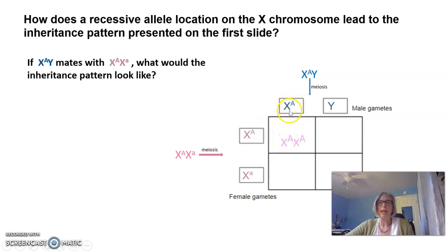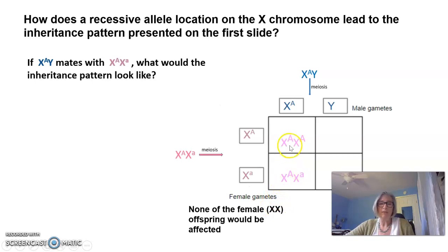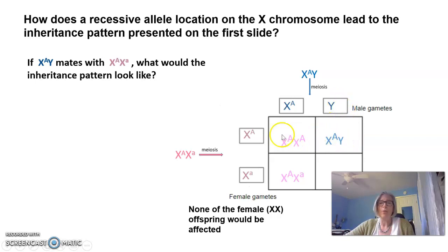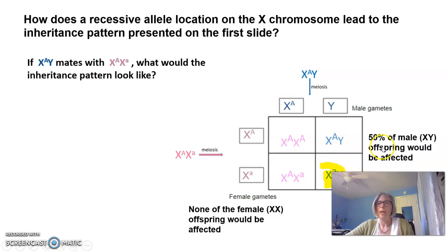Looking at what would be produced: taking the X from the father and the X from the mother gives a homozygous dominant female — she would not display the trait. The next case gives a heterozygous female. None of the female XX offspring would be affected because they have a dominant allele overriding the recessive. For males, the father gives the Y chromosome; the mother could give the X with the dominant allele — unaffected — or the X with the lowercase allele — affected. So 50 percent of the male XY offspring would be affected.